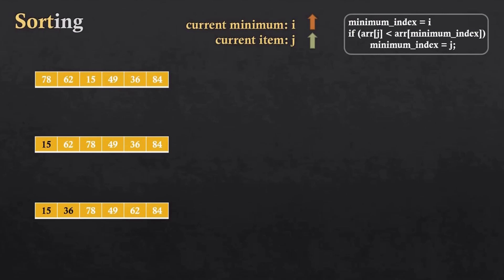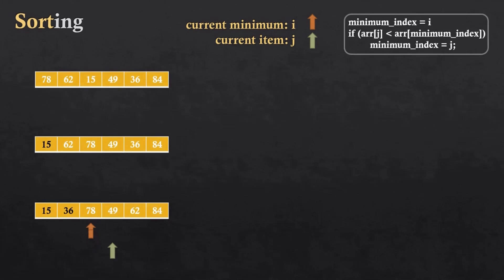For the third iteration, the current minimum and current item will start from index 2. Again the current item will move forward. If the current item is smaller than the current minimum, it will update itself. The current item moves forward. At this point, 49 is the minimum, so it will be swapped with the second index, which holds 78.